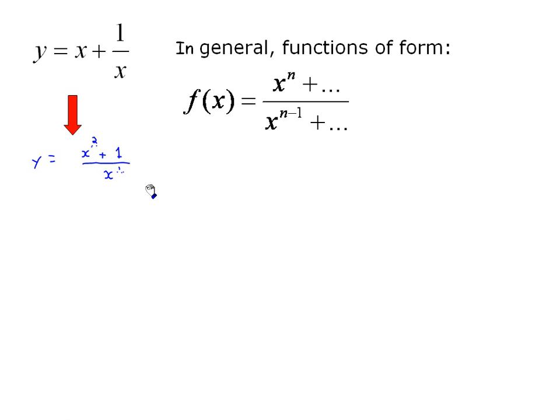So in general, functions of this form, any function where the leading exponent is x to the n, and the leading exponent on the denominator is x to the n minus 1, that is one less, will have a slant asymptote of form y equals mx plus b. Now if you think back to regular horizontal asymptotes, if the numerator was one greater than the denominator exponent, we recognize that there was no limit as x increased or decreased without bounds, therefore there was no horizontal asymptote, and that's true. But in those cases, what you are getting, in fact, is a slant asymptote.